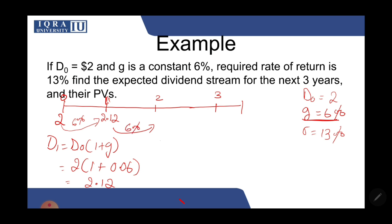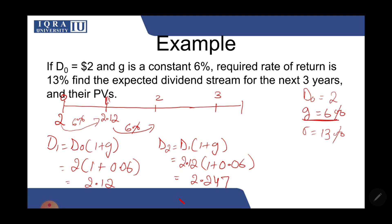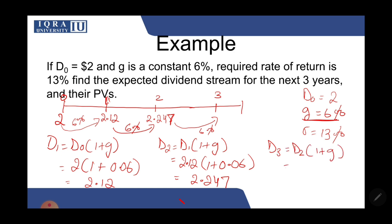This dividend will increase again next year at the 6% rate. So D2 will be D1 times (1 + g), which is 2.12 times 1.06, giving us 2.247. Similarly, D3 will be D2 times (1 + g), and this will become 2.382.